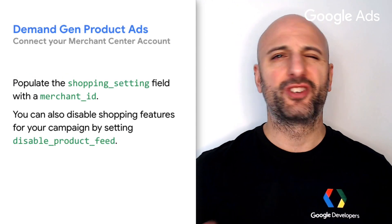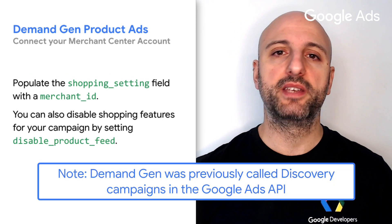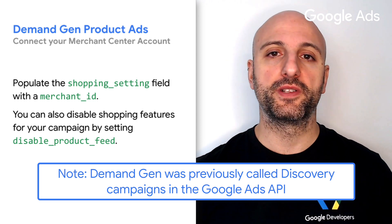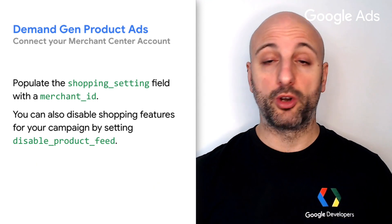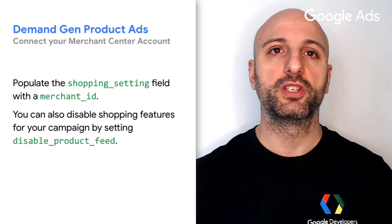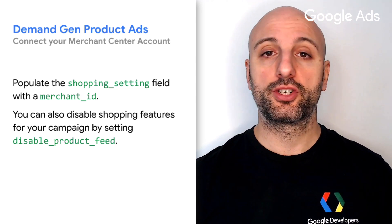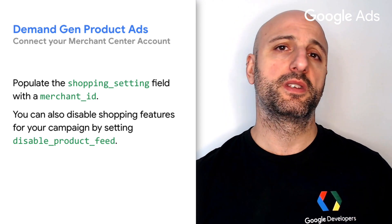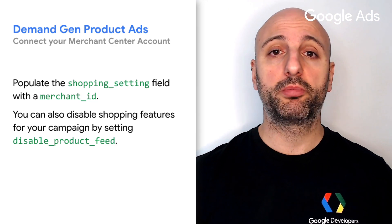We mentioned demand gen campaigns earlier and we have another exciting update in that space too. Starting with version 16, you can connect a Google Merchant Center account to a demand gen campaign so that it draws data from your product feed and automatically creates product ads to be shown in the shopping channel. To do so, set the Merchant ID property in the shopping setting field of your demand gen campaign. You can also disable the product feed later by toggling the disable product feed flag.